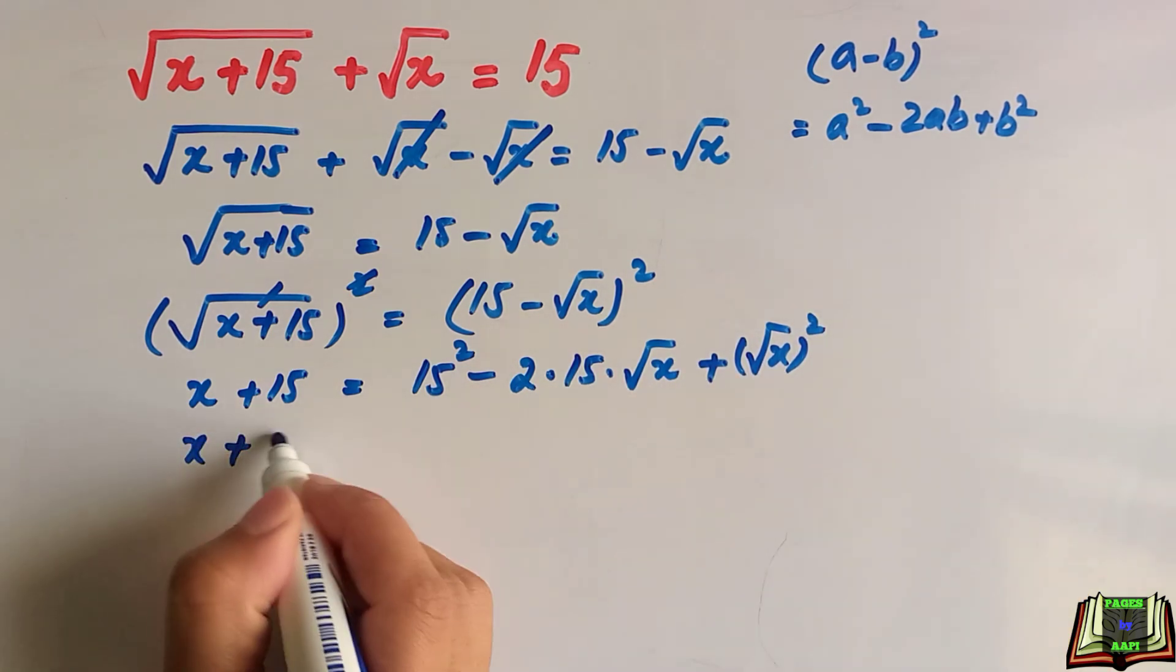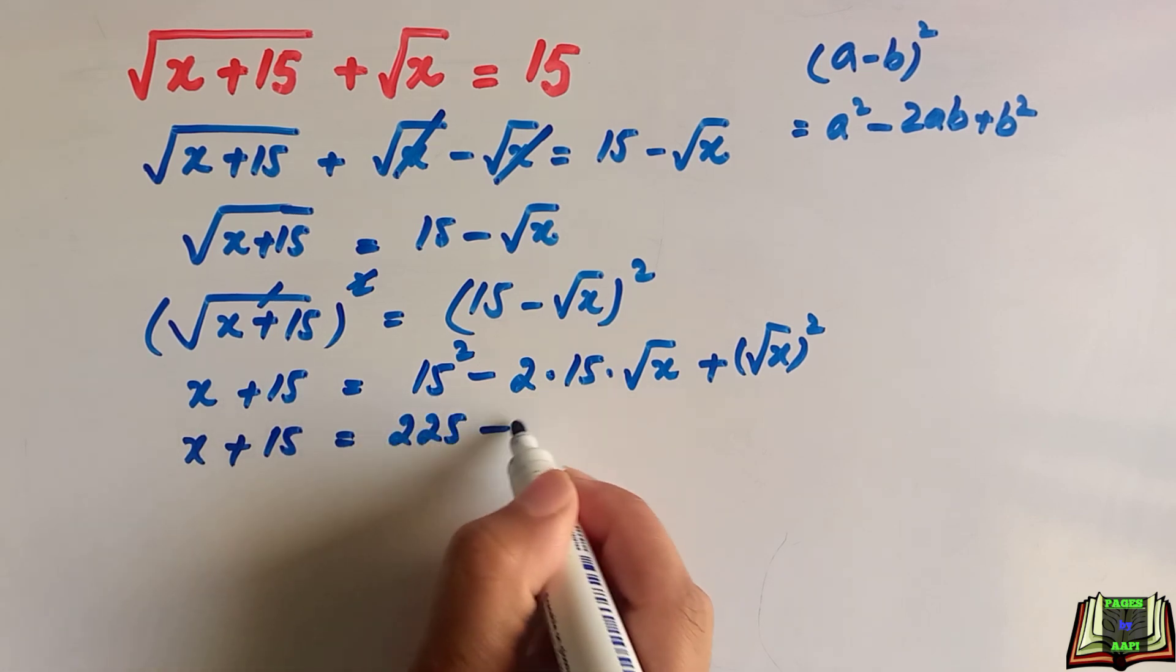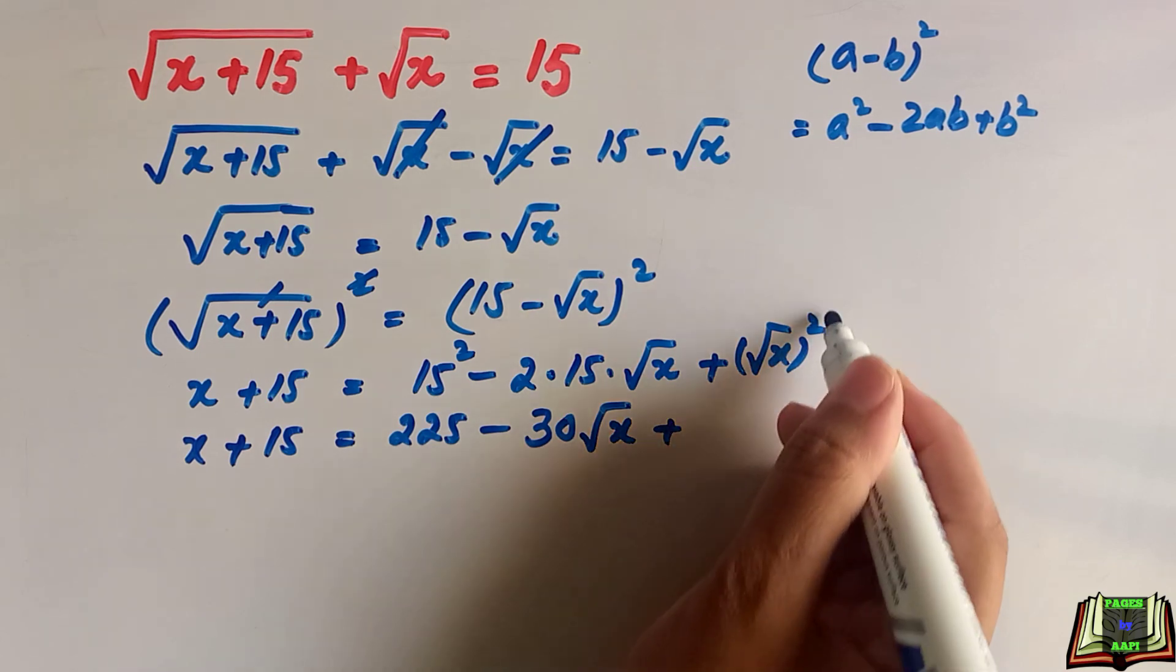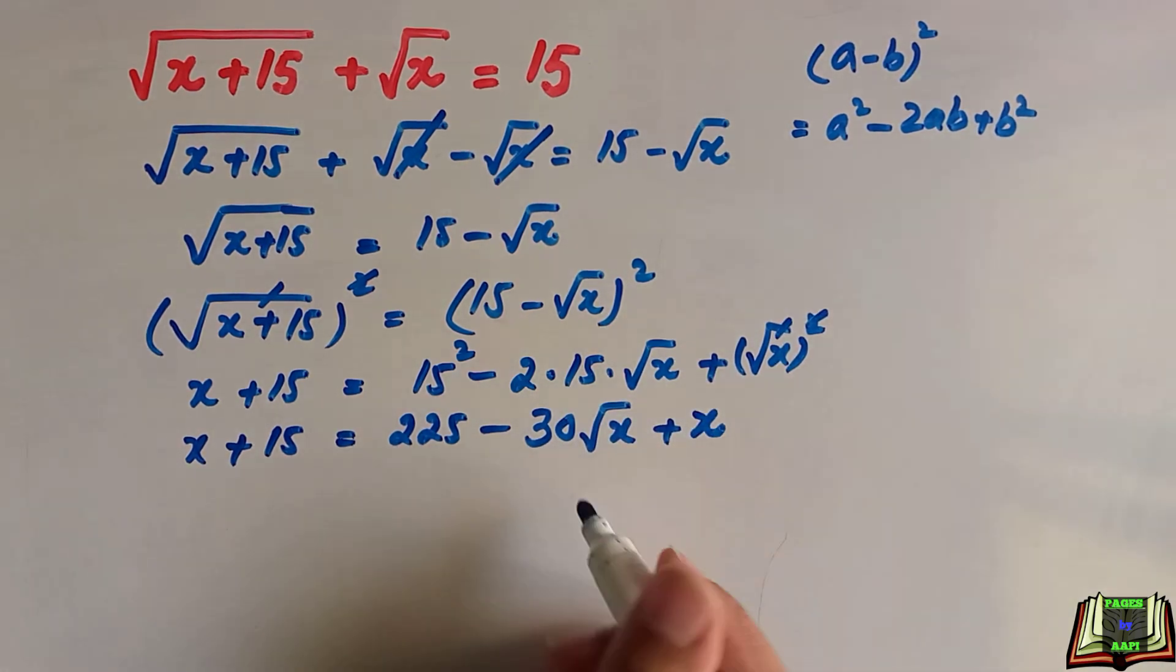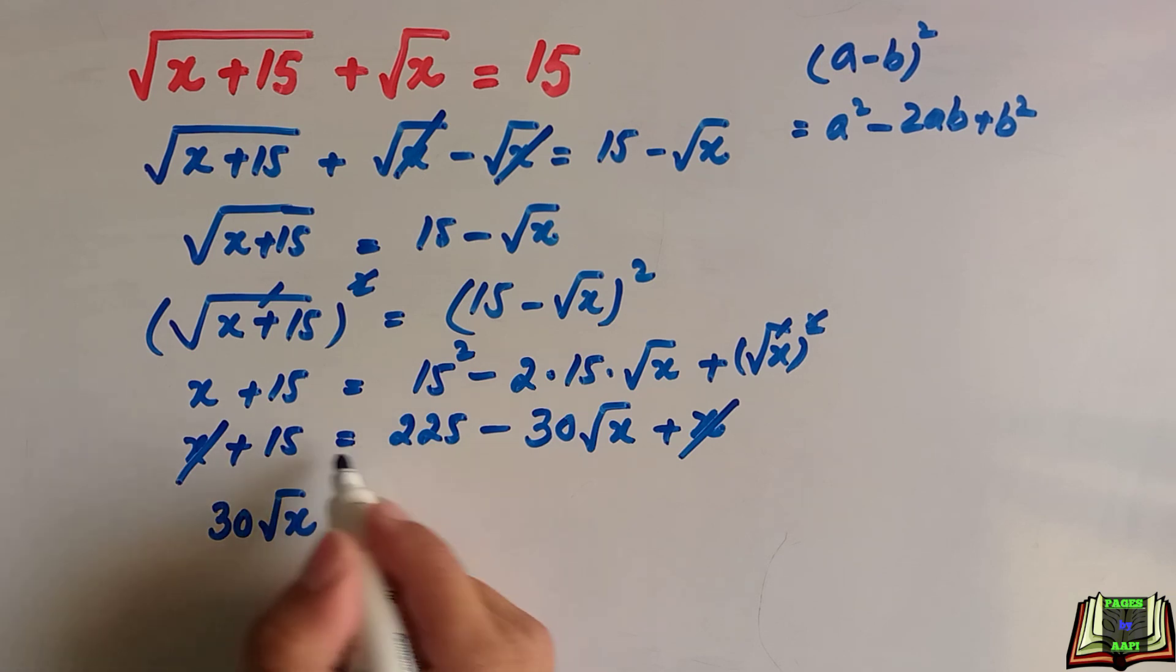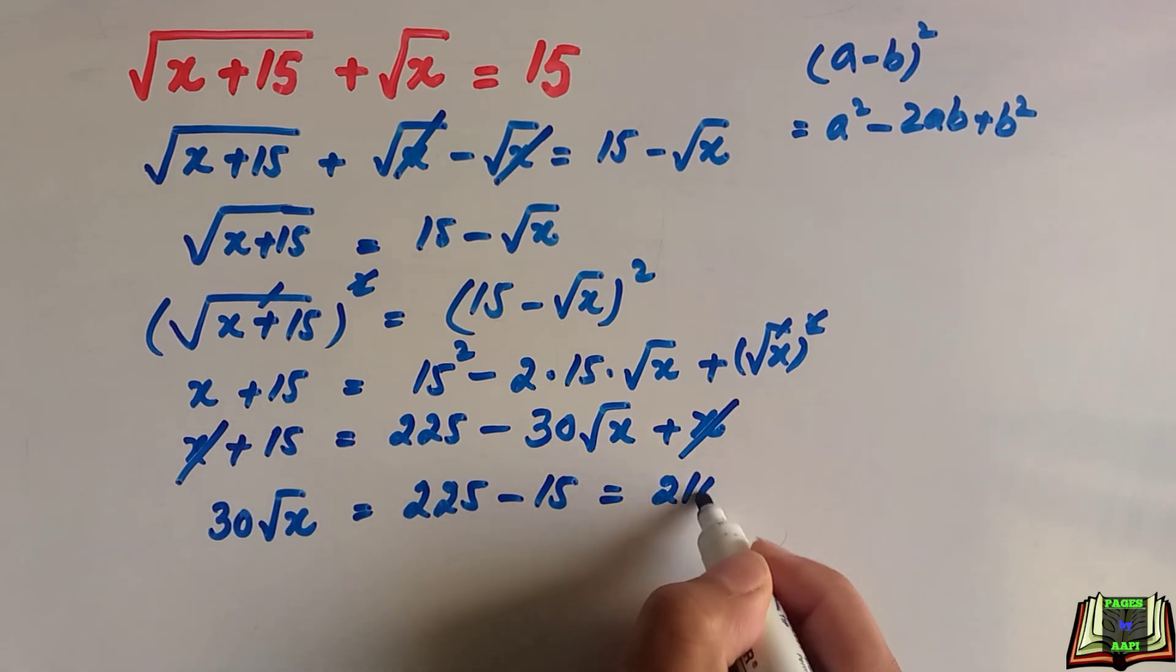x plus 15 is equal to 15 square is 225 minus 2 times 15 is 30 square root of x plus this square and root cancel out is equal to x. This x and this x cancel out. We will take this to the left hand side. This will become positive and 225 minus 15 that is equal to 210.